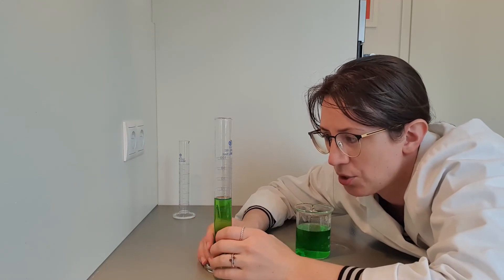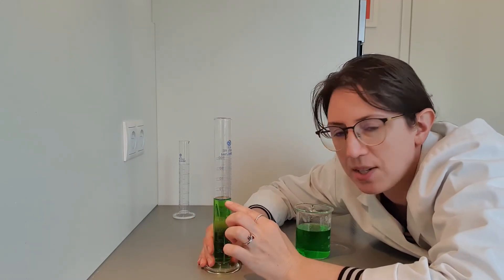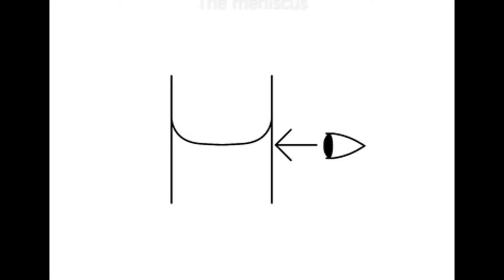As you can see from the diagram, the meniscus line just sits on top of the 60 line there. The top of the volume of liquid is not a perfectly straight line.